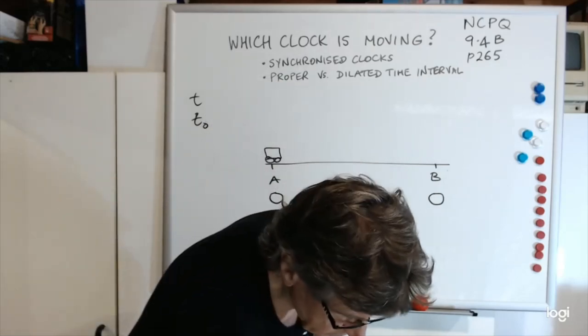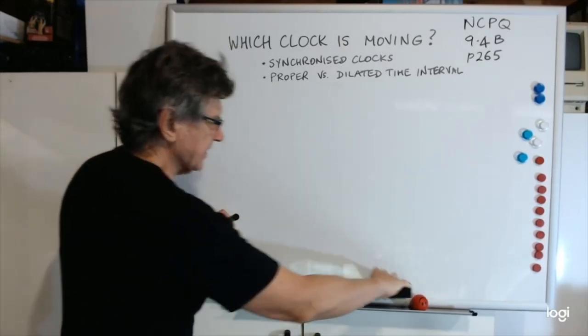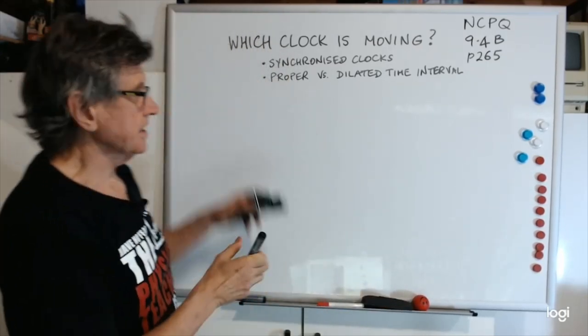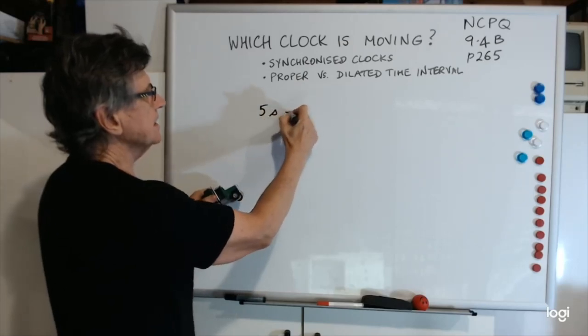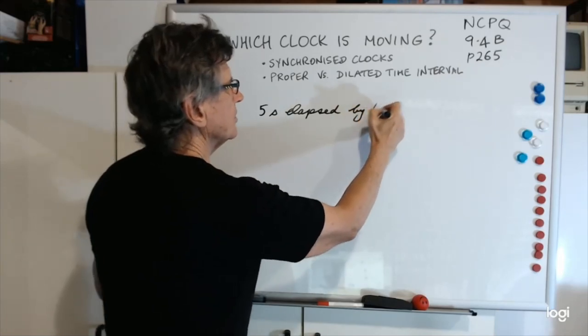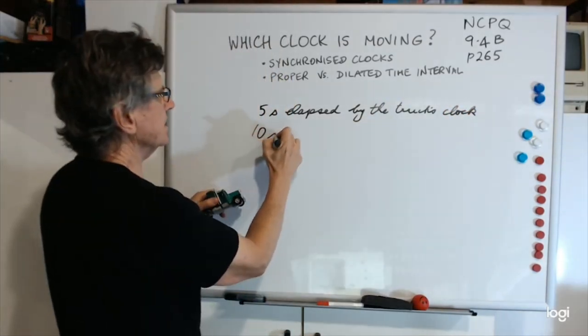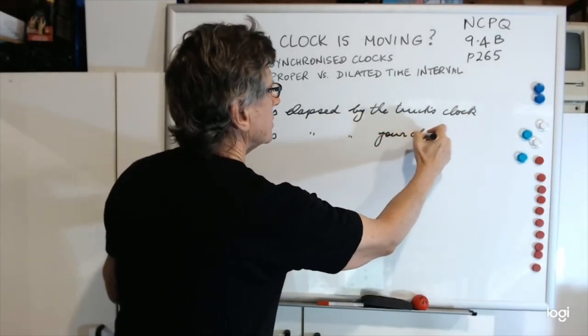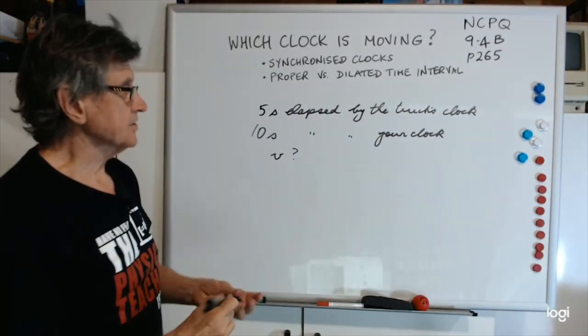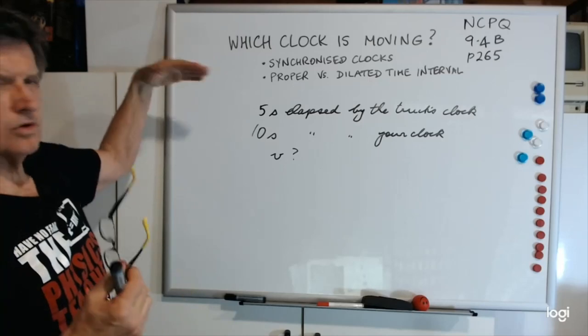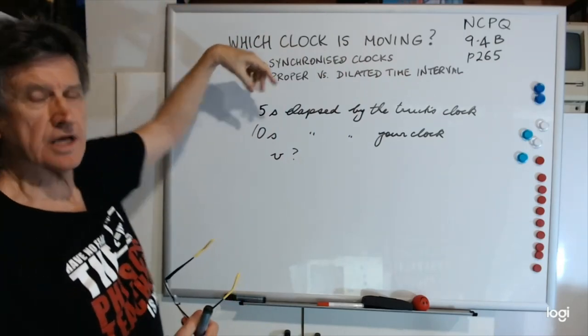Let me give you an example. Let's imagine you've got a truck that does what I've said, and it took according to the truck, let's say five seconds elapsed by the truck's clock, and say ten seconds elapsed by your clock. Now the question is, what speed was the truck going relative to you? Now this is a bit tricky. You're imagining you're at rest and you're seeing the truck go by. But this is five seconds elapsing for a journey past your house.